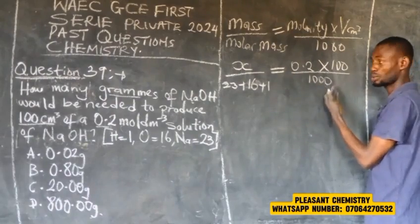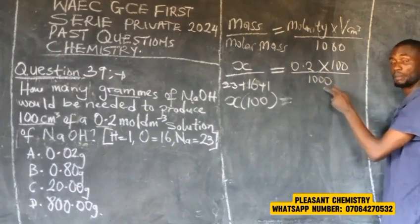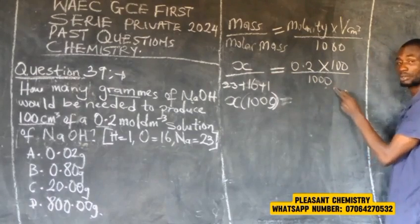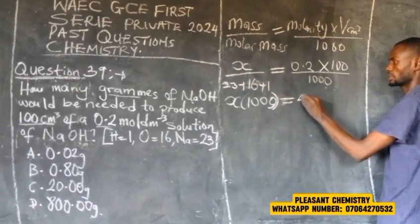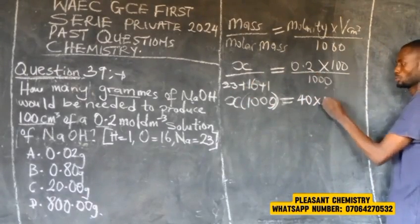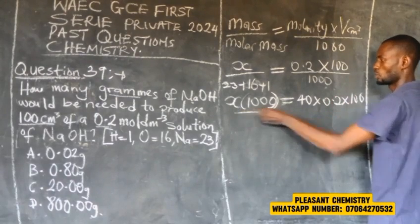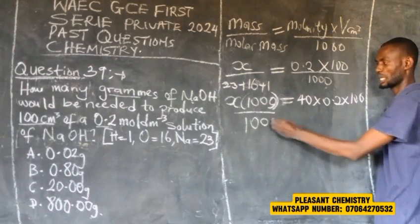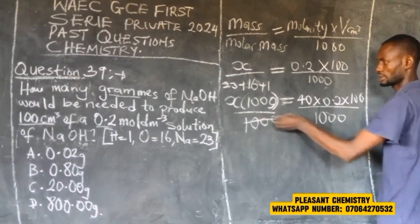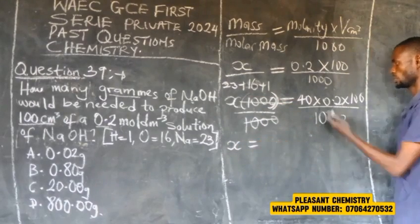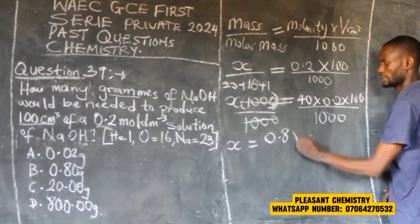Simplifying: 16 + 23 + 1 = 40 (molar mass of NaOH). So X equals 40 multiplied by 0.2 multiplied by 100, divided by 1000. Pressing the calculator gives X = 0.8 grams.